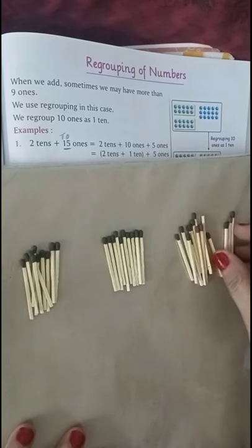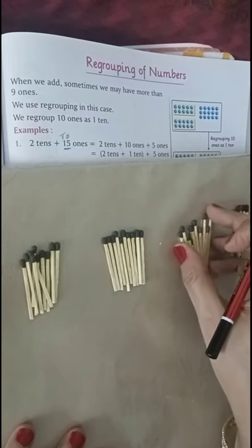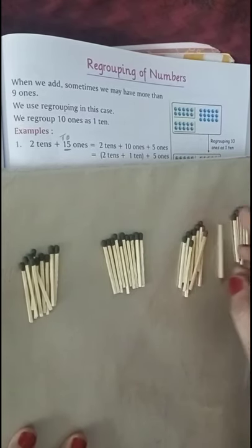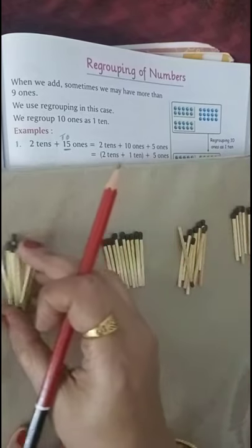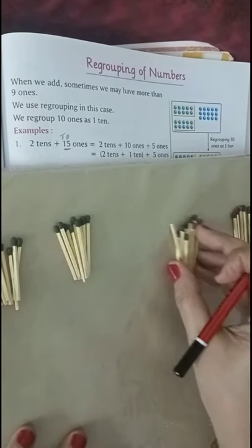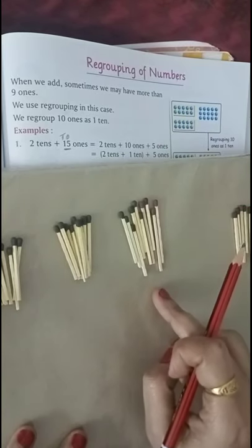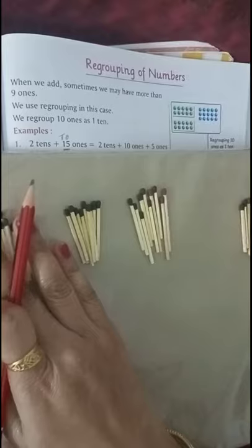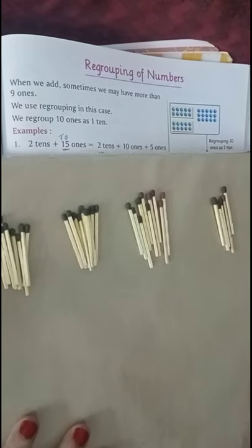How can we regroup this 15 ones? We can regroup this 15 ones by dividing this as 10 ones plus 5 ones. So this is 1 ten. 10 plus 10 plus 10, 3 tens. 3 tens plus 5 ones.